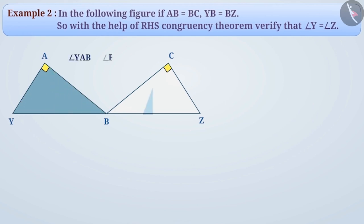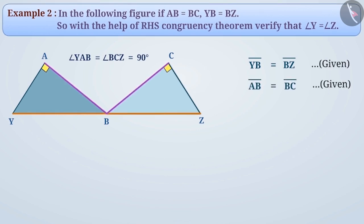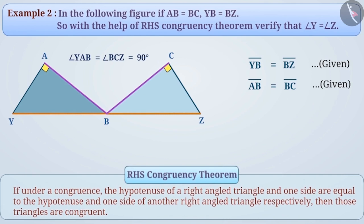Triangle YAB and triangle BCD are two right-angled triangles. In the question, we are given that sides YB equals side BZ and the side AB equals side BC. We know that the concept of the RHS congruency theorem is that if under a congruence, the hypotenuse of a right-angled triangle and one side are equal to the hypotenuse and one side of another right-angled triangle respectively, then those triangles are congruent. From this, we can say that triangle YAB and triangle BCD are congruent under RHS congruency theorem.